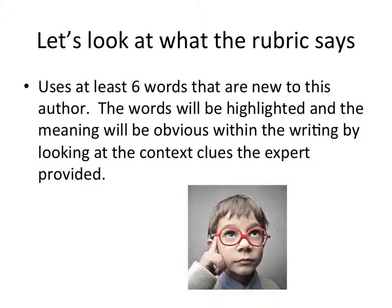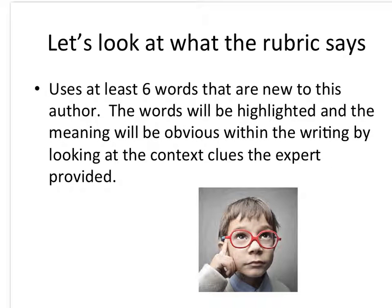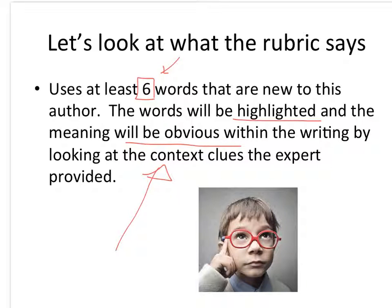Let's look at what the rubric says before we do anything else. It says: uses at least six words that are new to this author. The words will be highlighted and the meaning will be obvious within the writing by looking at the context clues the expert provided. So that means I need to find six, I need to highlight them so my teacher knows these words are new to me, and I need to make sure I insert context clues.